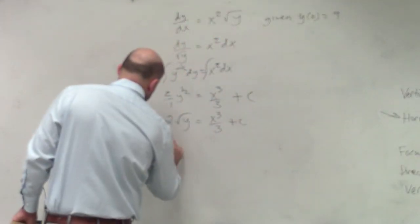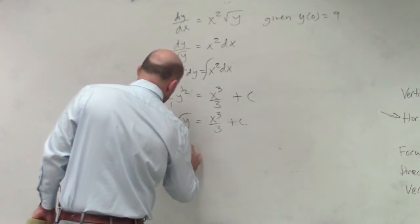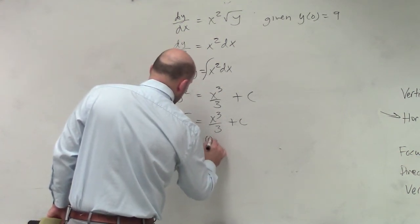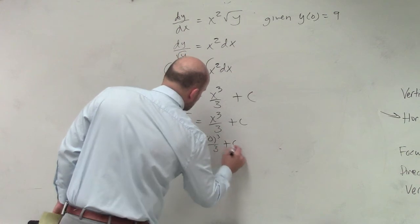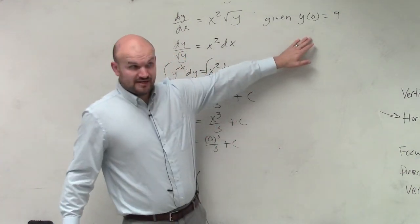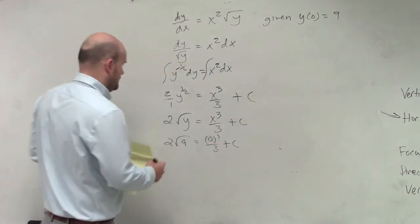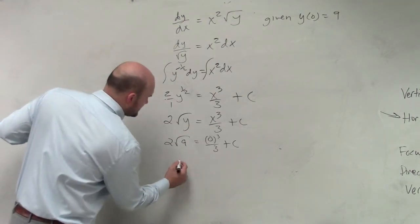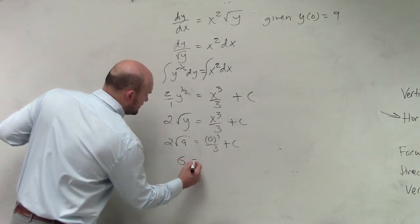So I'm going to do that right now to find c. So I'm going to have 2 times the square root of 9 equals 0 cubed over 3 plus c. Again, that's the information that was provided to me. So obviously, the square root of 9 is 3. So that 2 times 3 is 6 equals c.